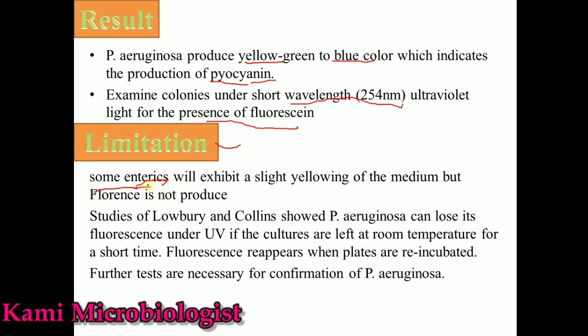A limitation of this medium is that some bacteria such as Enterococcus can also produce yellowish pigments. However, if examined under UV light, they will not produce fluorescence. Additionally, two scientists named Labori and Collins found that some Pseudomonas aeruginosa isolates also did not produce fluorescence under UV light.